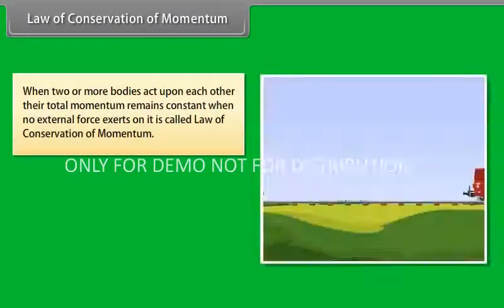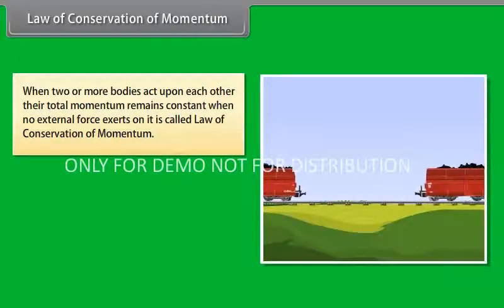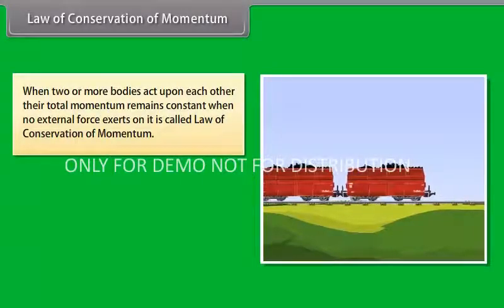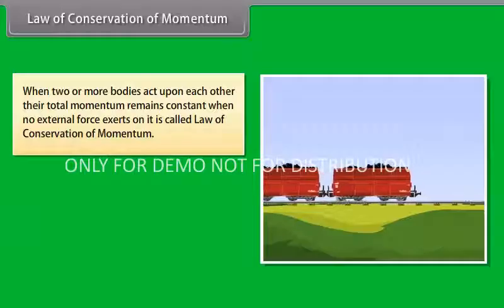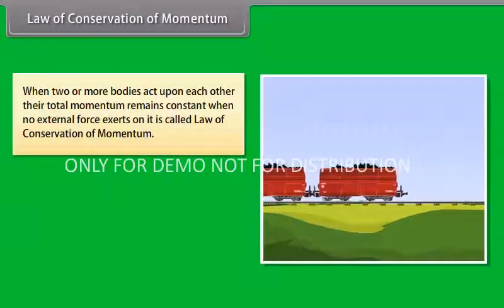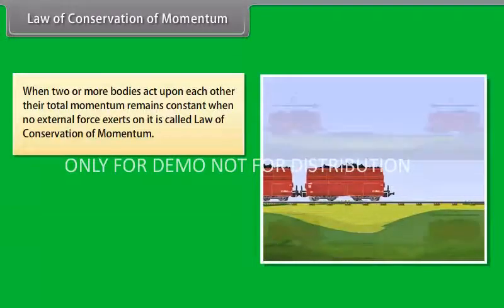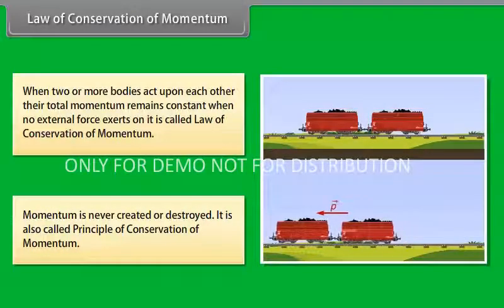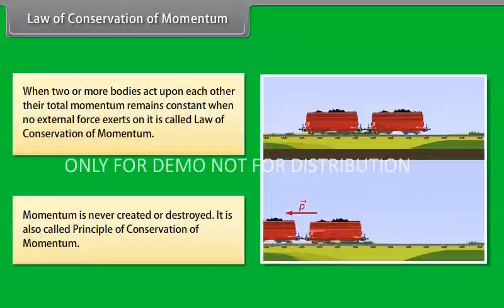Law of conservation of momentum: When two or more bodies act upon each other, their total momentum remains constant when no external force exerts on it. This is called law of conservation of momentum. Momentum is never created or destroyed. It is also called principle of conservation of momentum.